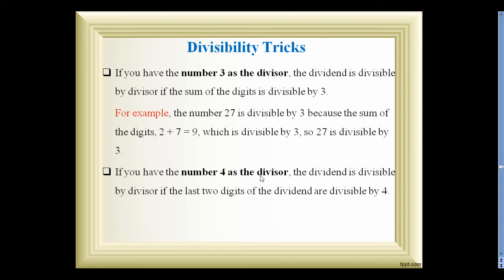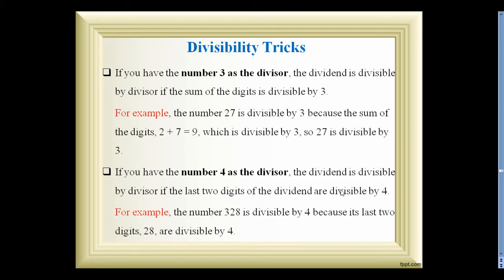If a number has 4 as a divisor, the dividend is divisible by the divisor if the last 2 digits of the dividend are divisible by 4. For example, take the number 328. We check by looking at the last 2 digits: 28. Is 28 divisible by 4? Yes. Therefore, 328 is divisible by 4.